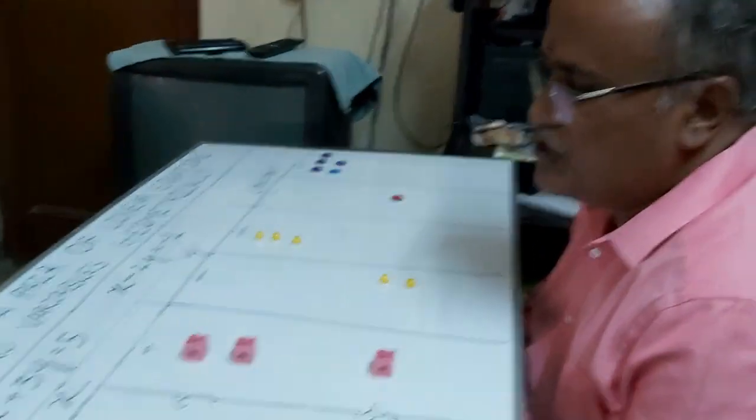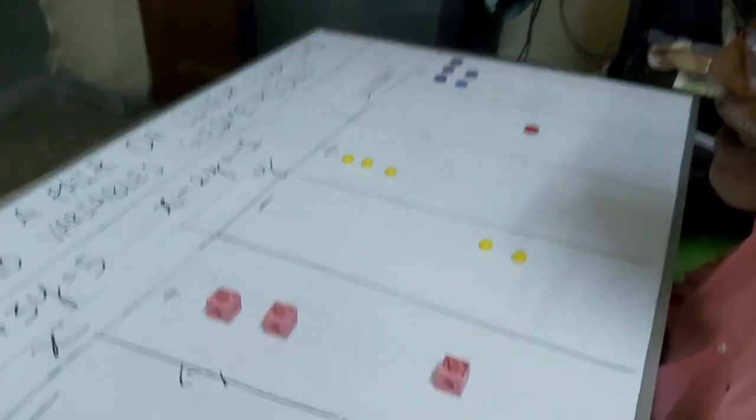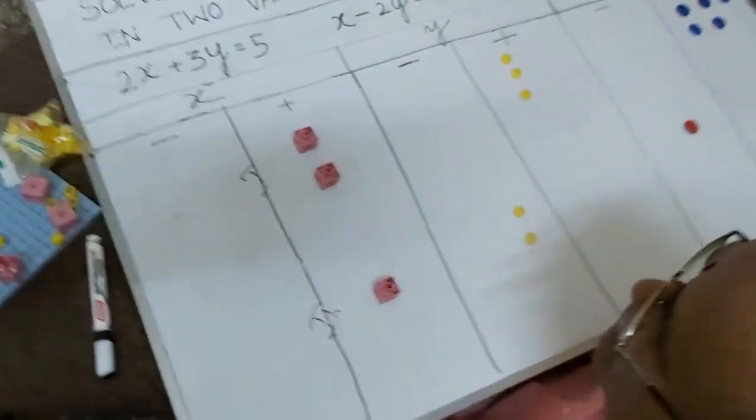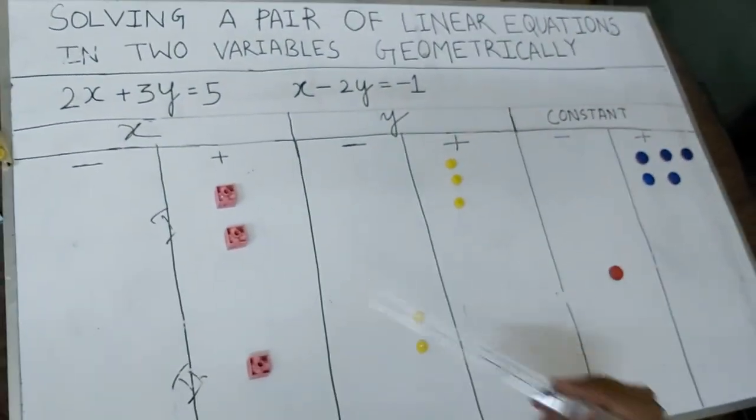Good afternoon to all of you. Today we are going to see how to solve a pair of linear equations in two variables through an activity, or geometrically. In the previous video I showed you how to solve a linear equation in one variable through activity or geometrically, and now here we are going to solve a linear equation in two variables through this activity.